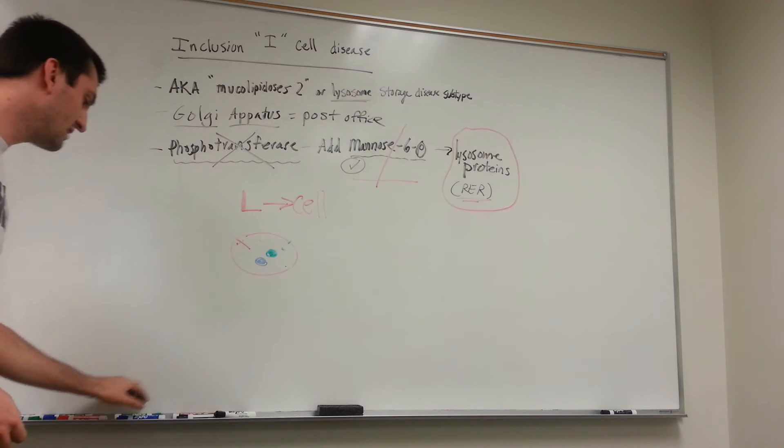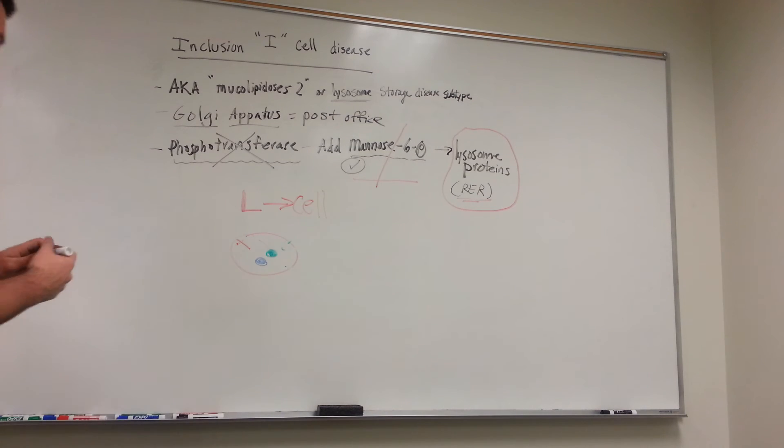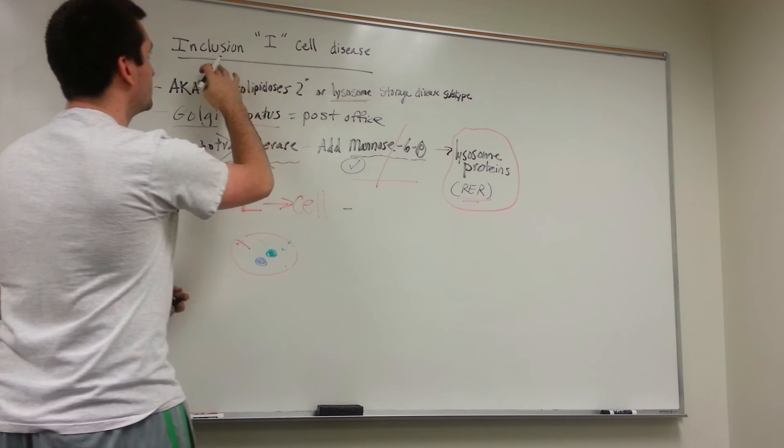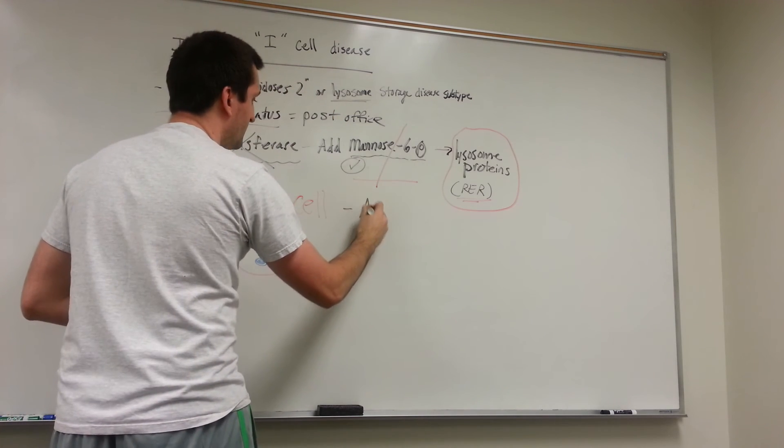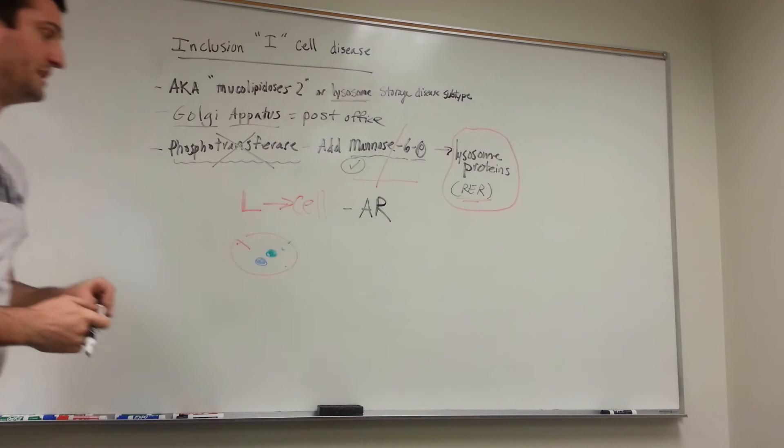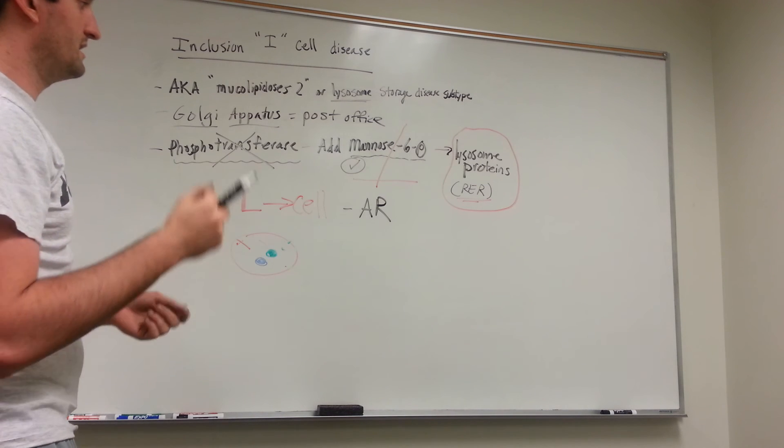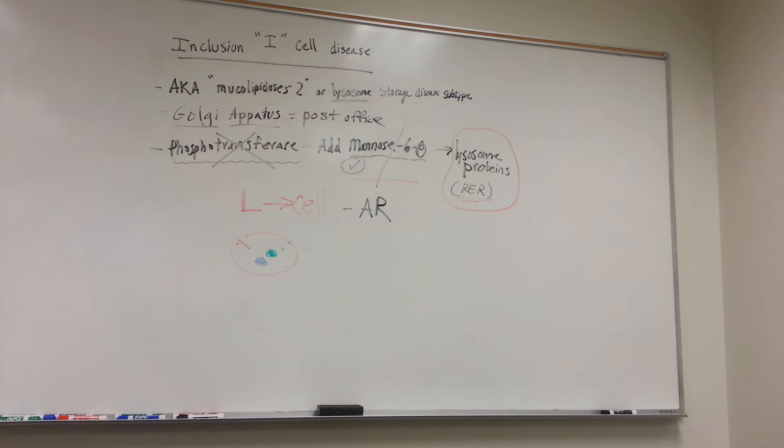I'd like to note that Inclusion Cell Disease is thought to be an autosomal recessive disorder, meaning you need two recessive alleles. Just having one allele for the mutation will not give you the disease.